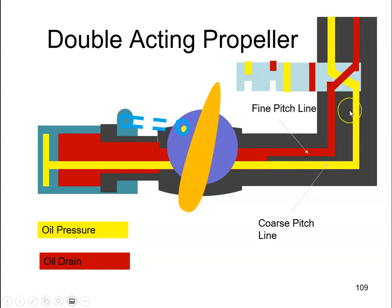If we suffer an engine failure, then we will lose all oil pressure. All oil pressure will be lost. When we suffer the engine failure, again we want to put the propeller into the feathered position.